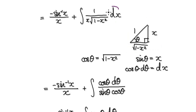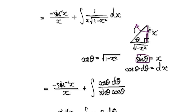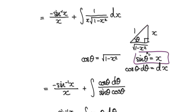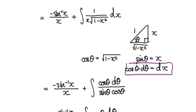Now we need to somehow extract dx. Looking at this, sin theta equals opposite over hypotenuse — sin theta equals this thing here. So to differentiate both sides, that will then give us this. So now we've got our dx.